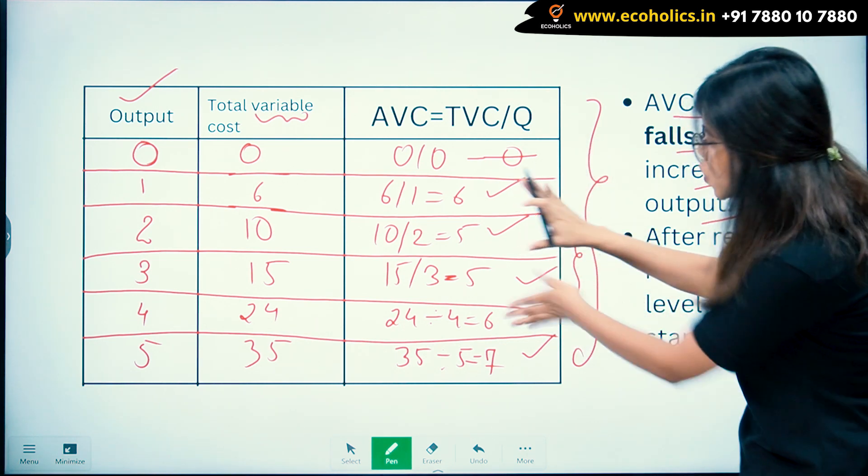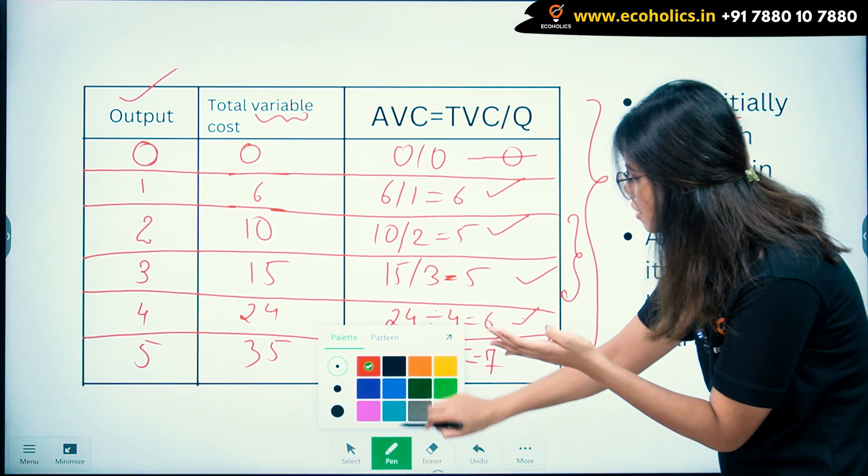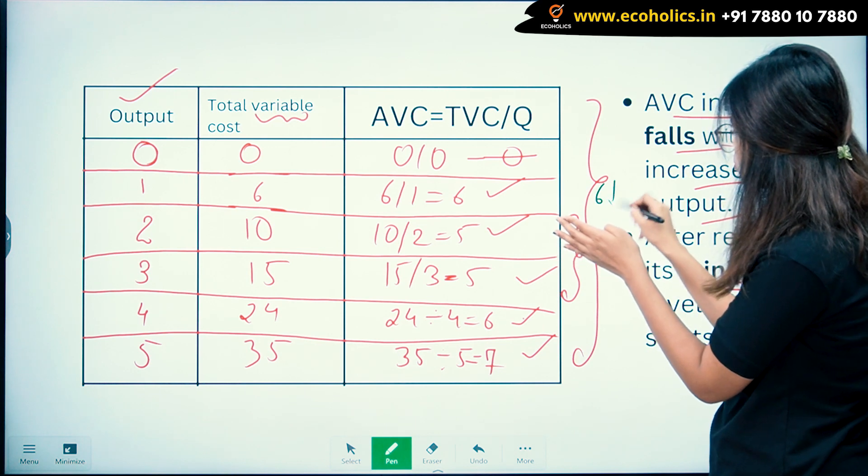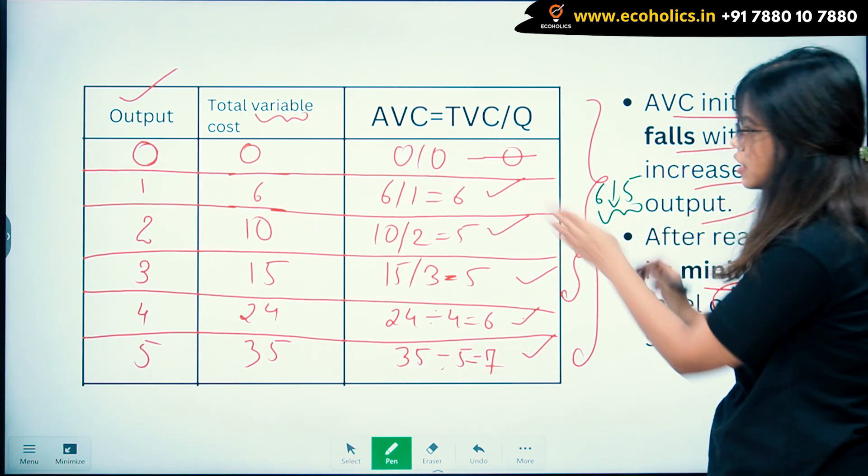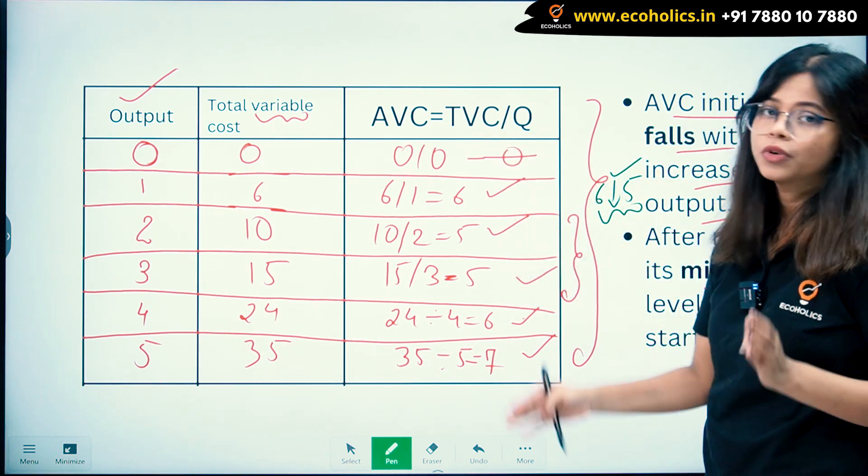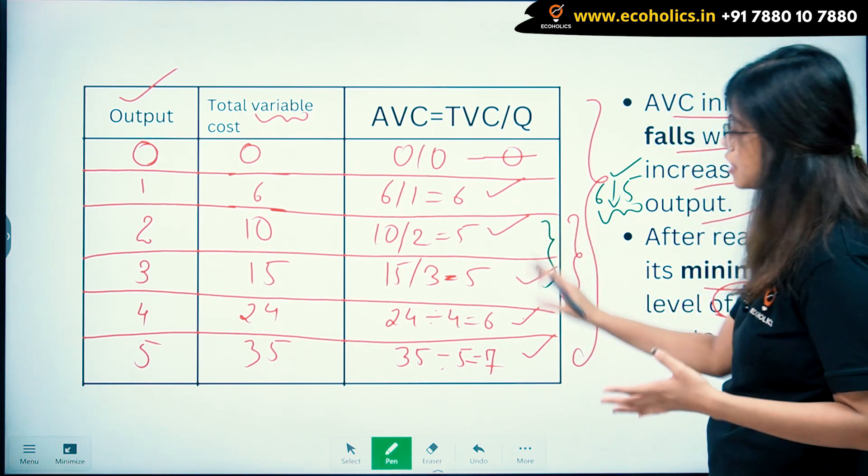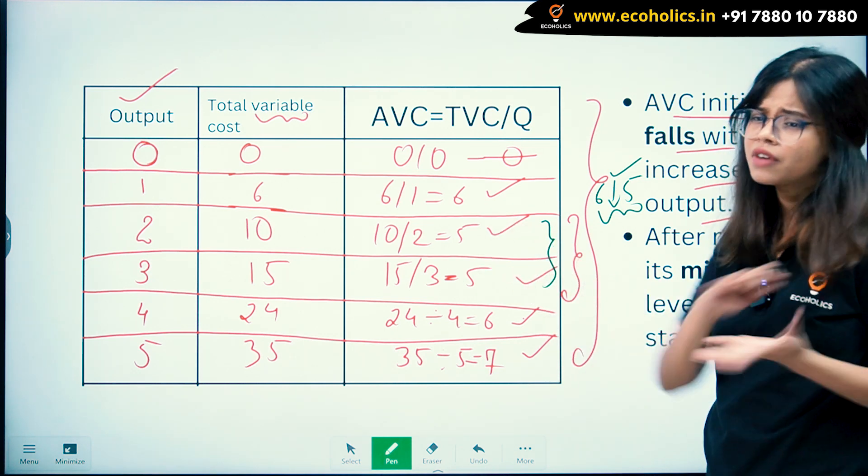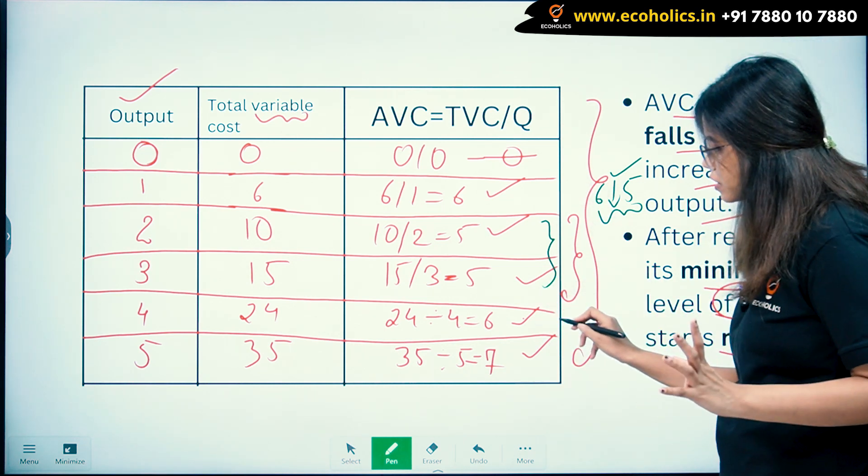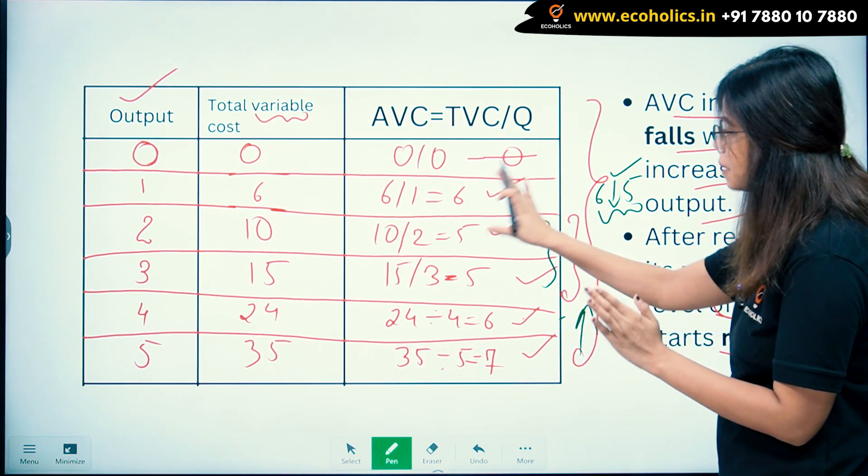It is initially falling from 6 to 5. Your AVC is falling with increasing output. Initially it is falling—your cost is falling to produce this output. Then 5 to 5, it is constant at the minimum level of 5.